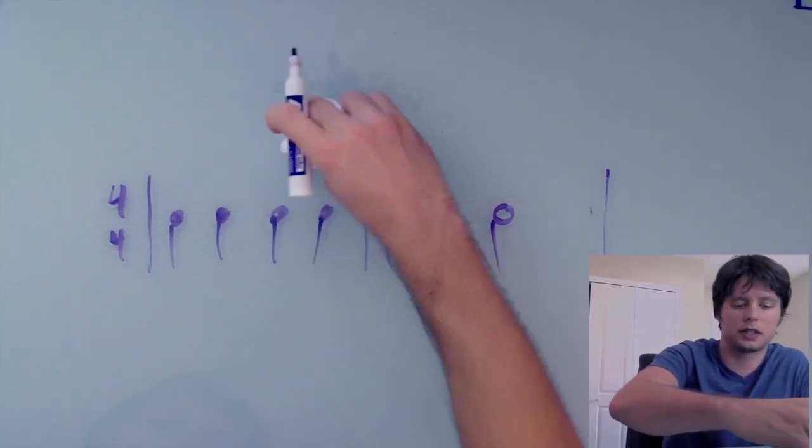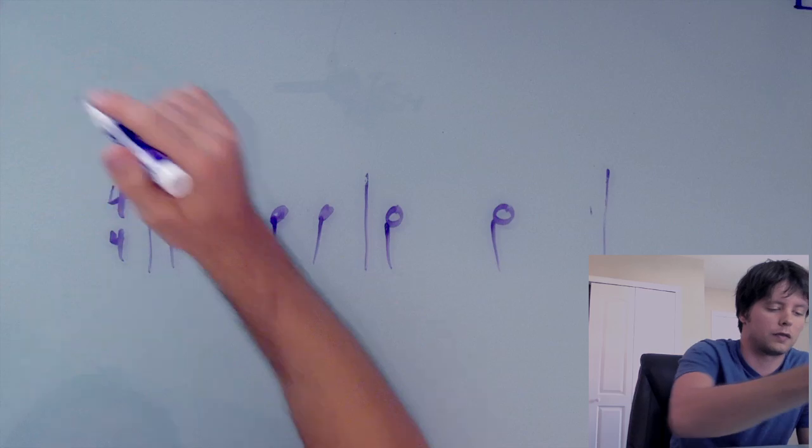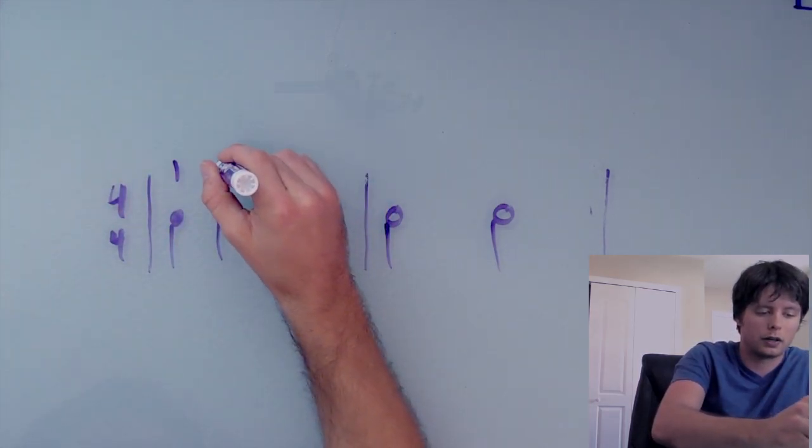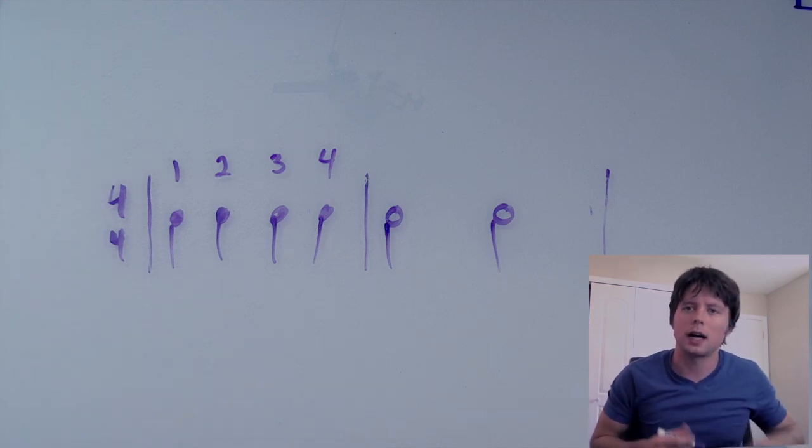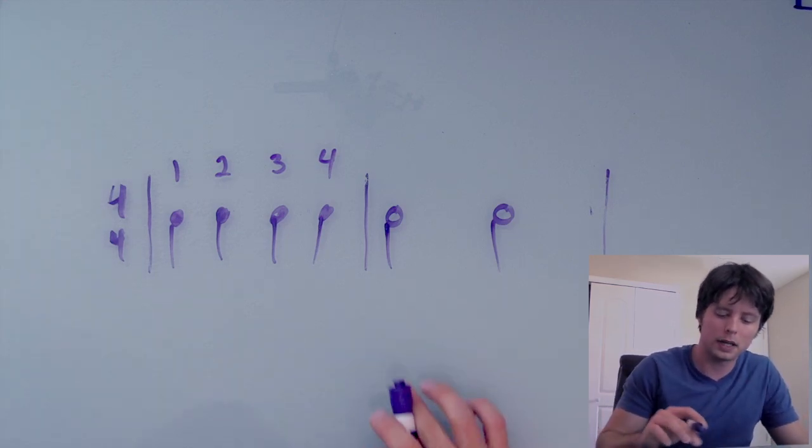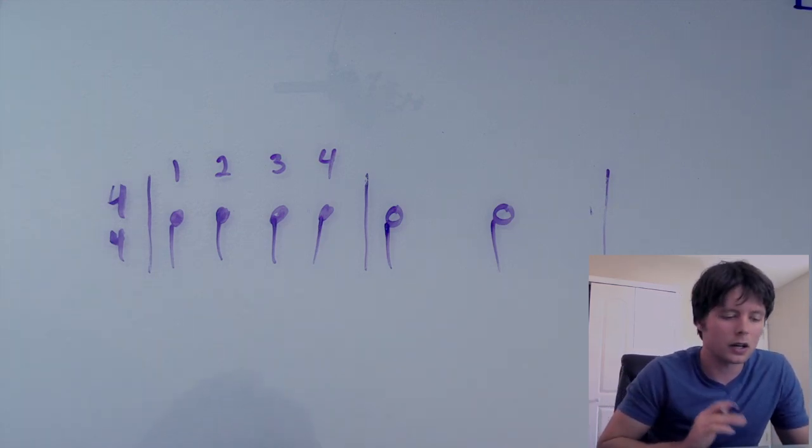But the much simpler answer is just that there are four beats in a measure. Count it as one, two, three, four. Now it seems like the obvious choice. But that's not always the case.